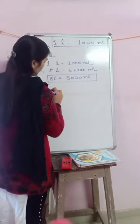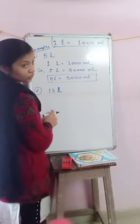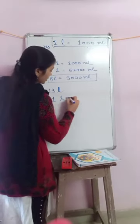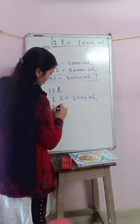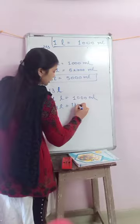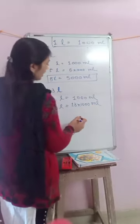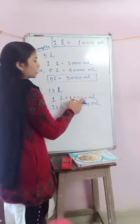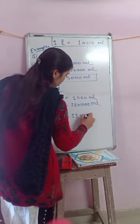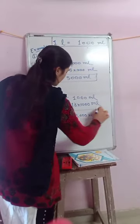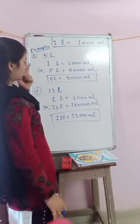Example two: thirteen liters. Same process you have to follow again. One liter equals one thousand milliliters. So thirteen liters equals thirteen multiplied by one thousand milliliters. You can also directly add the three zeros. Thirteen liters equals thirteen thousand milliliters. That's it. First conversion is done.